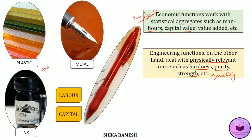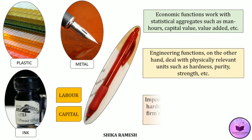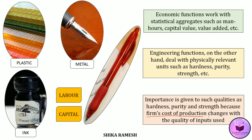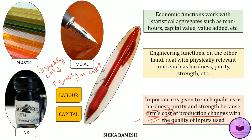For instance, the quality or hardness of the plastic used for the outer casing of the pen, or the strength or purity of the metal used for the nib. Here we are mainly focusing on the characteristics of the inputs used for production, and such qualities are given importance because the firm's cost of production changes with the quality of inputs used. If low quality plastic or metal is used, the firm's cost will be low; if high-grade plastic or pure, strong metal is used, the firm's cost of production will also increase.